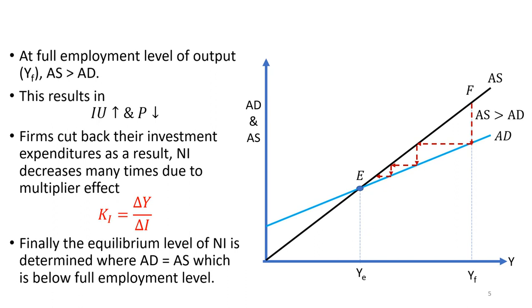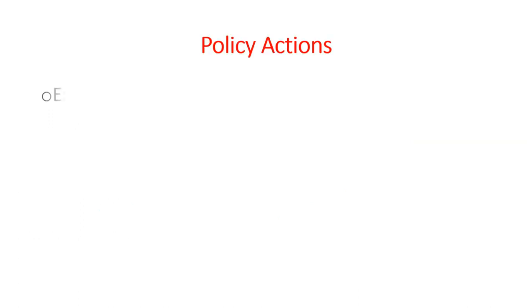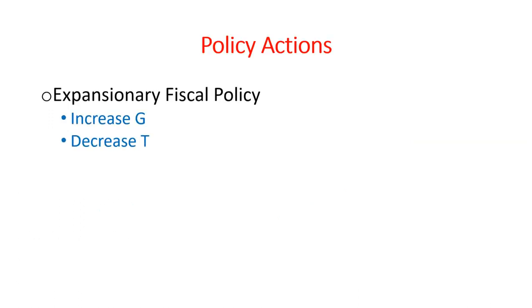According to Keynes, government intervention can help the economy restore equilibrium at the full employment level. The government can do this by pursuing Expansionary Fiscal Policy or Expansionary Monetary Policy.